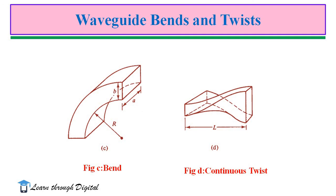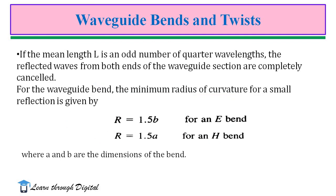Generally, E-bend and twist are used to change the direction of electromagnetic waves. For the waveguide bend, the minimum radius of curvature for a small reflection is given by R equals 1.5b for E-bend.